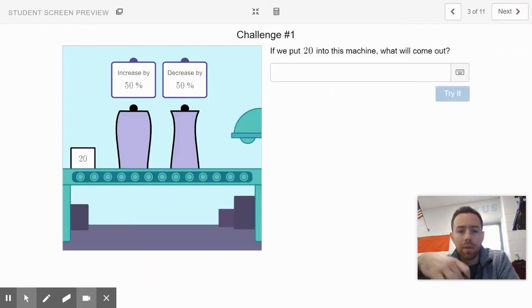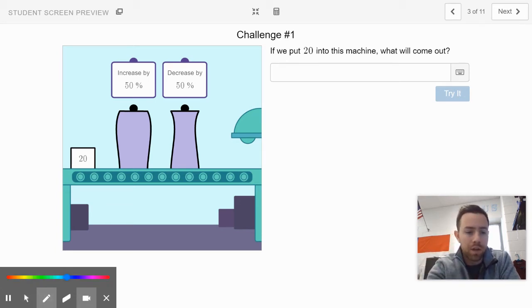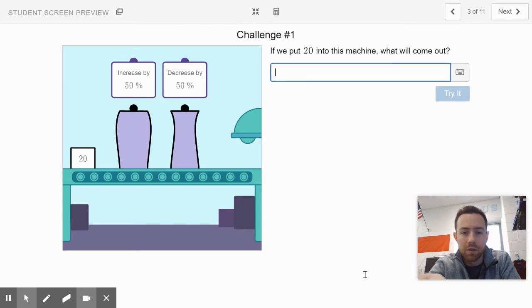Awesome job. We'll talk more about that in class, but challenge number one is going to help you understand what might happen. So I want you to take 20, put 20 in this machine, increase it by 50 percent, see what you get, and then take your new number, decrease that by 50 percent, and see what you get. See if that's less, greater, or equal to 20, but also type your final answer here in this box.